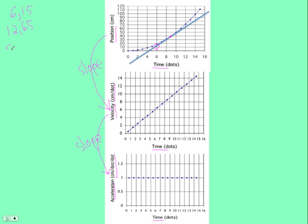You should know how to take a slope. It's the change in y, 65 minus 15, and let's put our units there, centimeters over 12 minus 6, the change in x. Those are dots. And that comes out to about 8.3 centimeter per dot. And if we look here at t equal 9 and we go over, it's about 9 centimeters per dot. That's not bad.